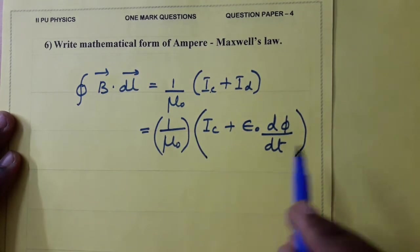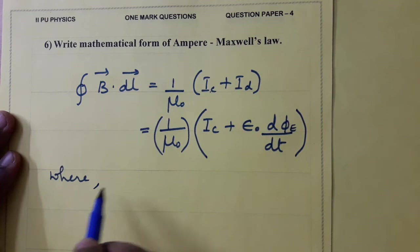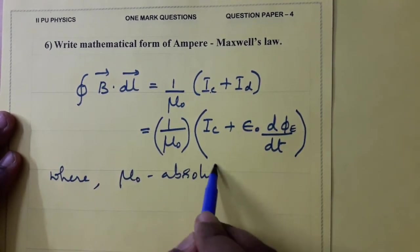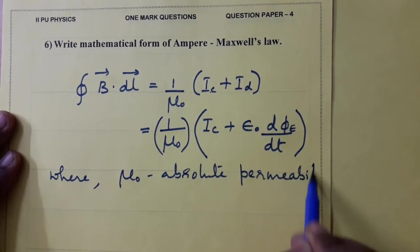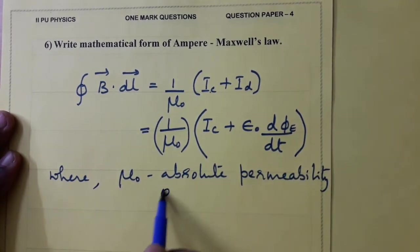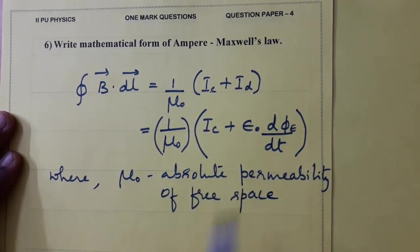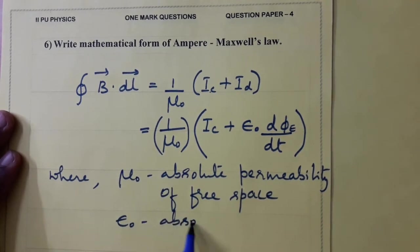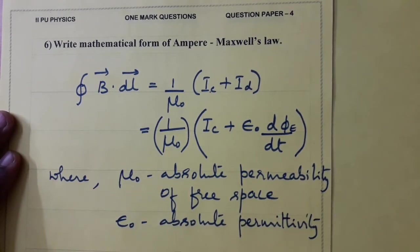One more form: 1 by mu naught I c plus epsilon naught mu naught d phi by dt. This flux is electric flux. Where mu naught is absolute permeability of free space. Epsilon naught is absolute permittivity of free space.